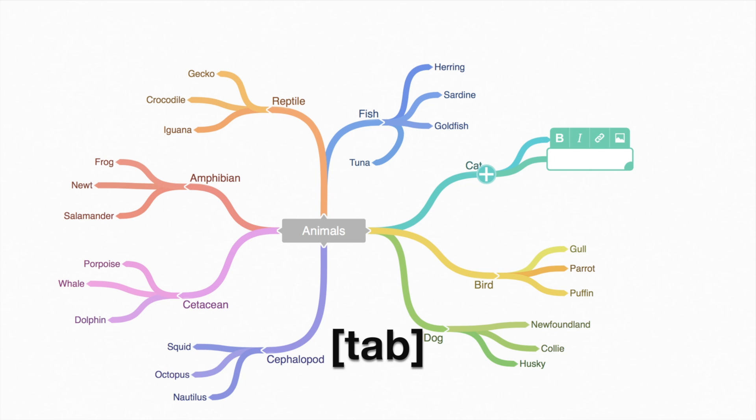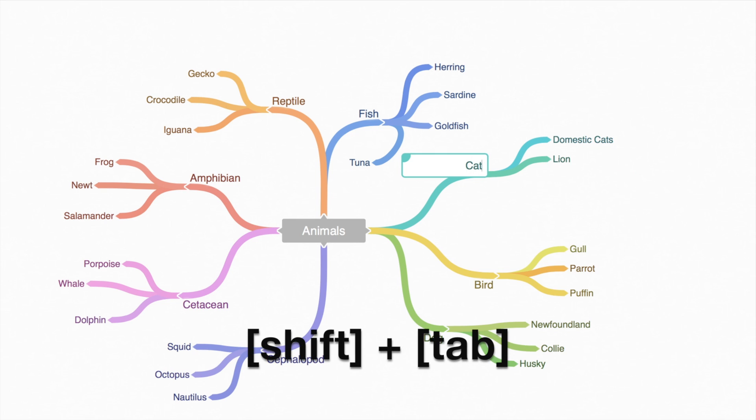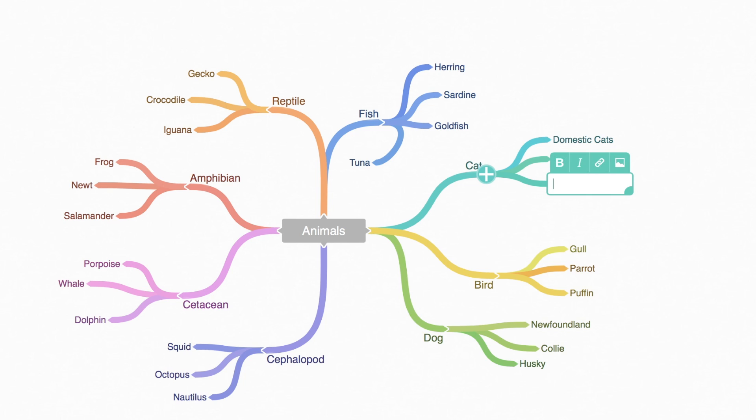Use Tab to create the child item, and Shift-Tab to go back to the parent. Tab again will create another child item, or open an existing child item which is empty.